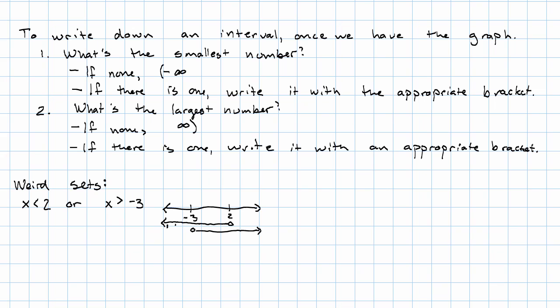We have or, so we want to be on one or the other or both. The graph looks like this. Remember, we said in these cases, all numbers are solutions.